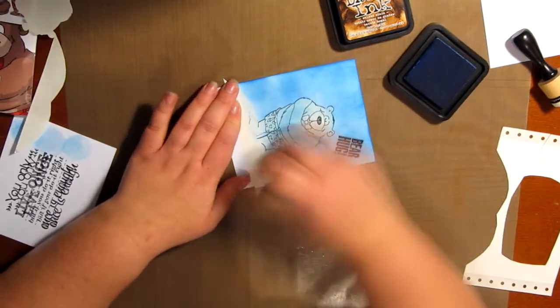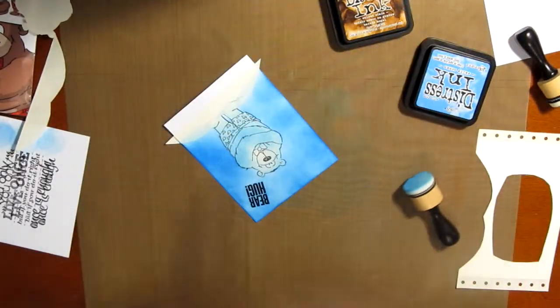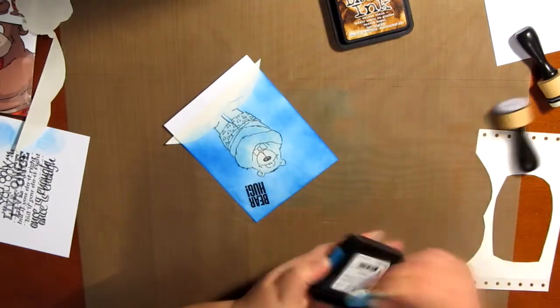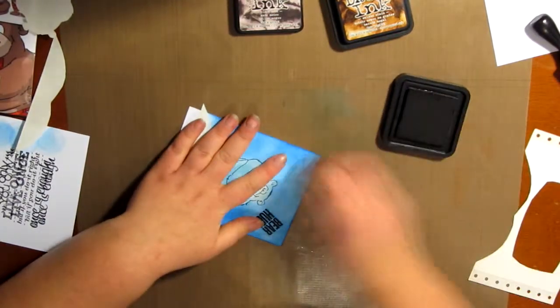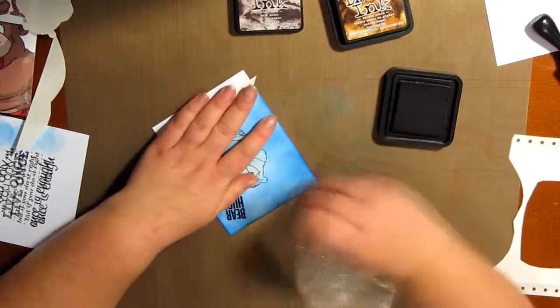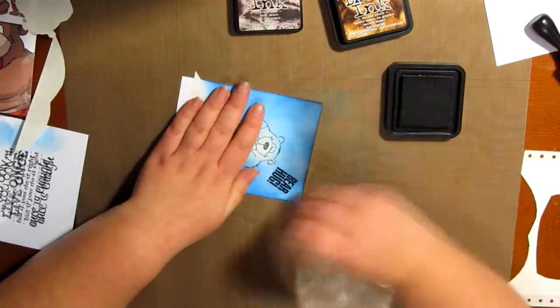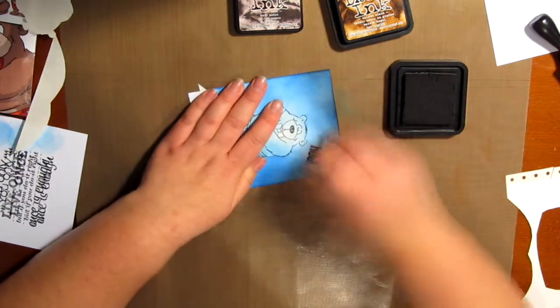So after I put on the salty ocean, I also used the black soot to give it a bit more depth and just darken up around the edges, once again using my mini blending tool.